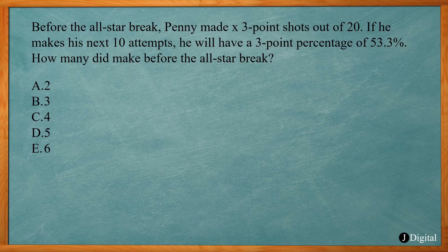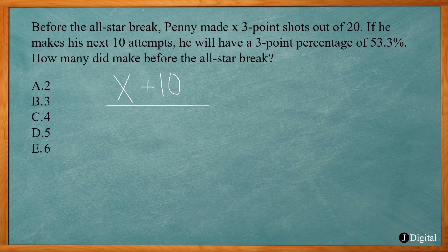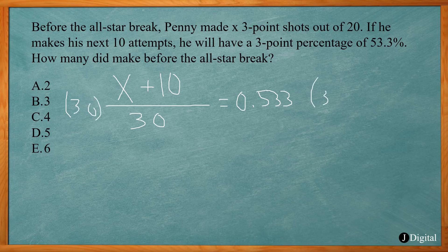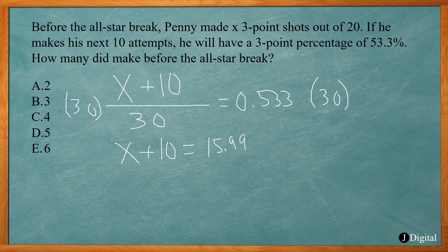This one says before the all-star break, Penny made X three-point shots out of 20. If he makes his next 10 attempts, he will have a three-point percentage of 53.3%. How many did he make before the all-star break? Our unknown is how many he made before the all-star break. If he makes his next 10, the total would be 20 plus 10 to give us 30, and that three-point percentage would be 0.533. Multiply both sides by 30: X plus 10 equals 15.99. Subtract 10 from both sides, and X equals 5.99, or 6.